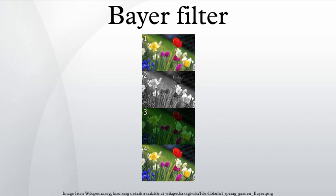To obtain a full color image, various demosaicing algorithms can be used to interpolate a set of complete red, green, and blue values for each pixel. These algorithms make use of the surrounding pixels of the corresponding colors to estimate the values for a particular pixel. Different algorithms requiring various amounts of computing power result in varying quality final images.